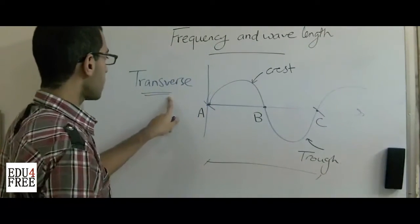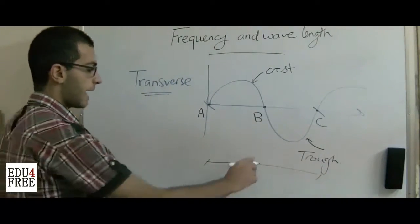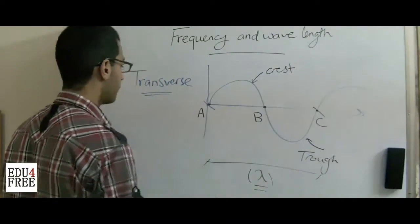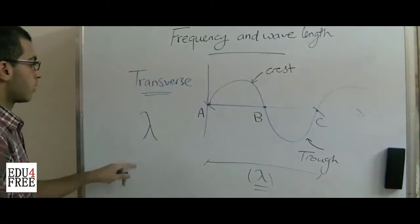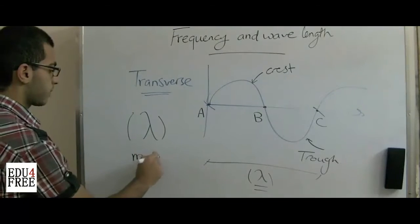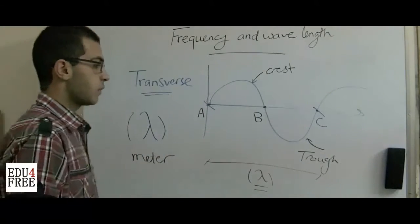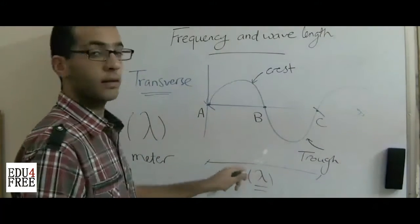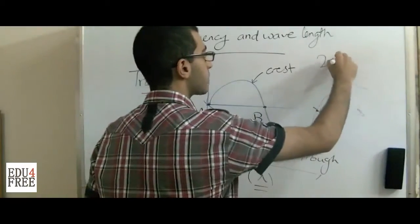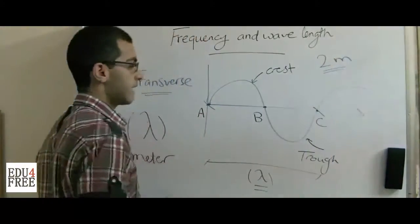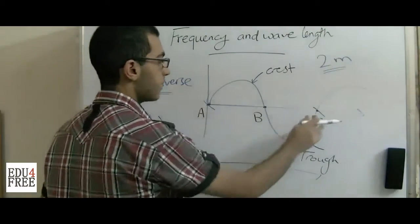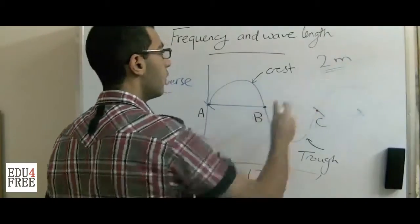We refer to the wavelength as lambda. This Greek letter, it's written like that, is called lambda. And the unit of the wavelength is meter. So we can say that the wavelength of this wave motion is two meters. This means that the distance between point A and point C is two meters.